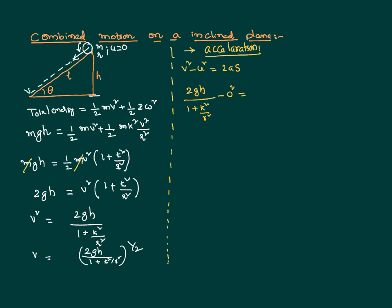Since the body starts from rest, the initial velocity u equals zero. We want to calculate the acceleration, and s is nothing but the length of the inclined plane along which it slides. Therefore we can write 2gl divided by (1 + k²/r²) equals 2gl. From the diagram, sin θ equals h/l, therefore we can write h as l·sin θ, or l as h divided by sin θ.